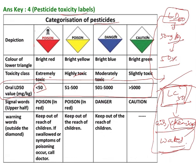Coming back to LD50: the first category is poison in red — very dangerous, requiring less than 50 mg/kg to kill 50 percent. The second is 51 to 500 mg/kg, the third is 501 to 5000, and the fourth is greater than 5000. Based on severity, toxicity is classified as extreme, high, moderate, and slight.